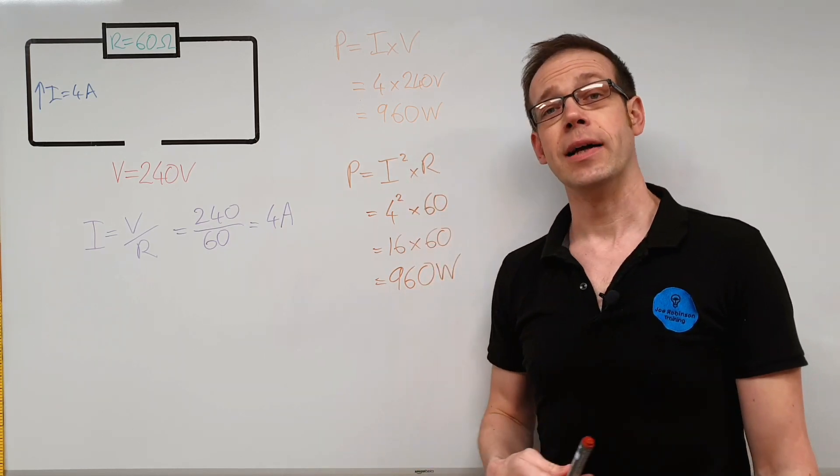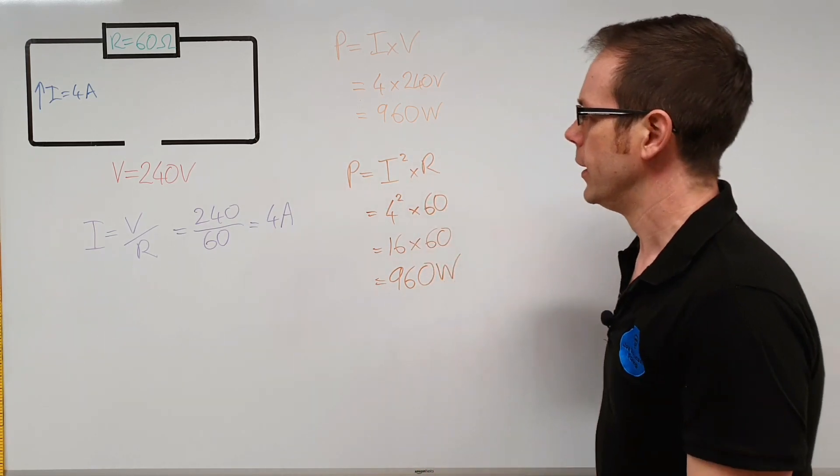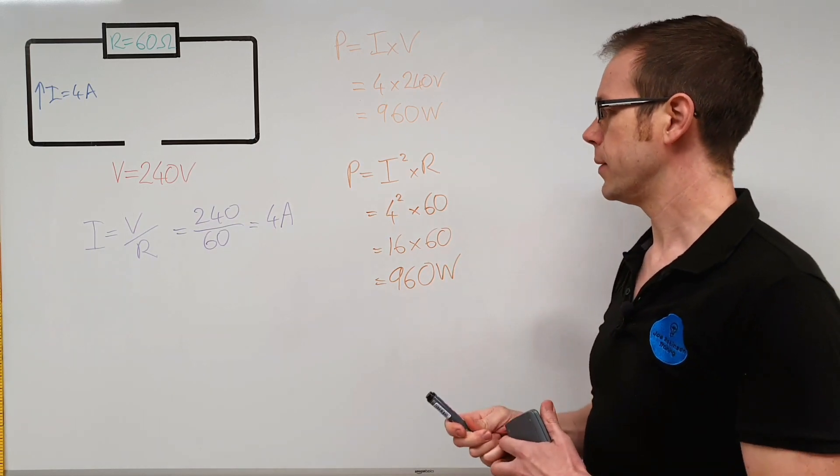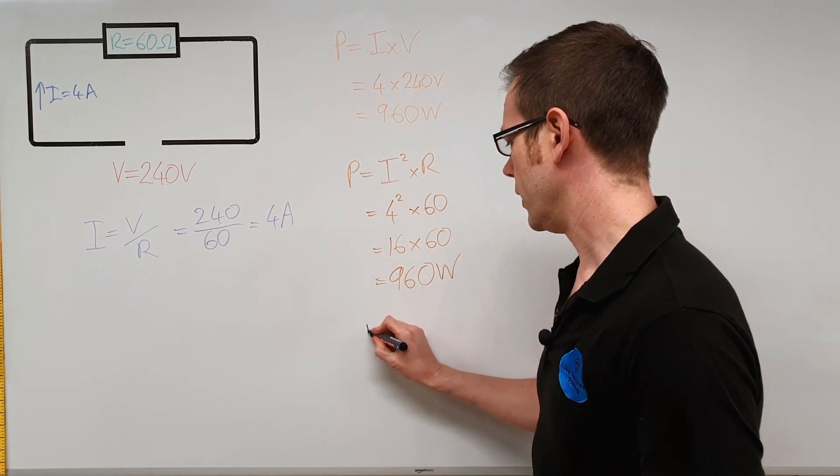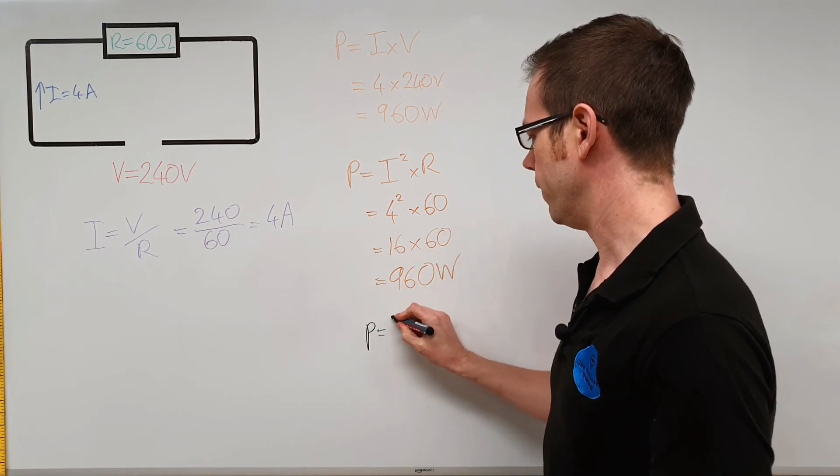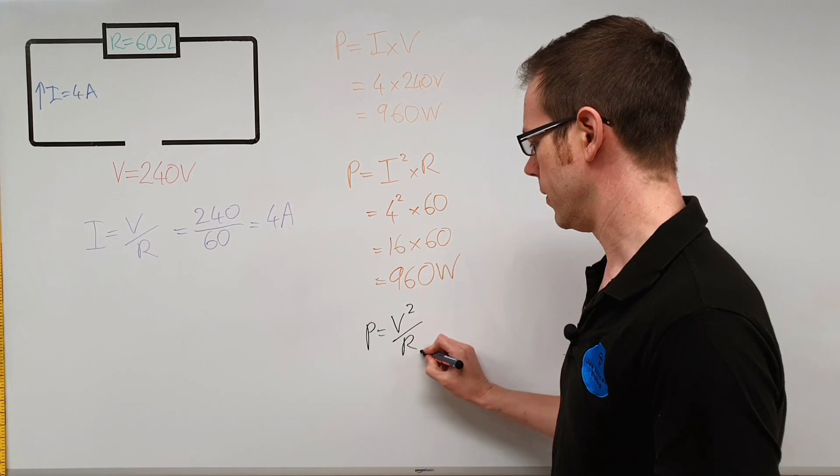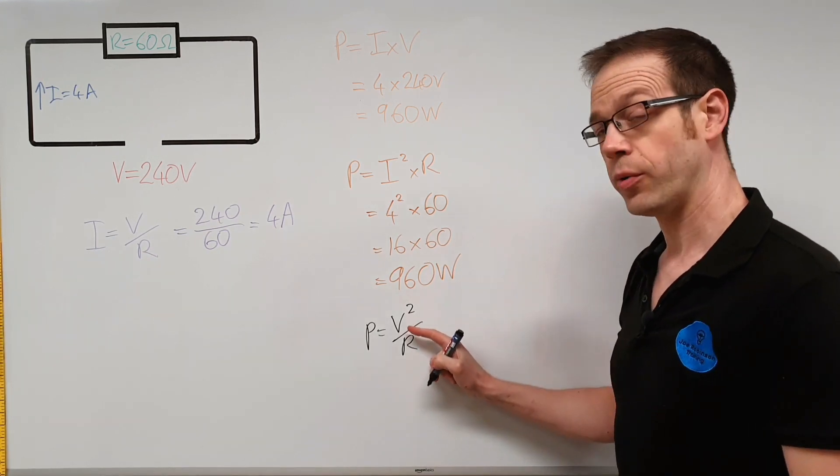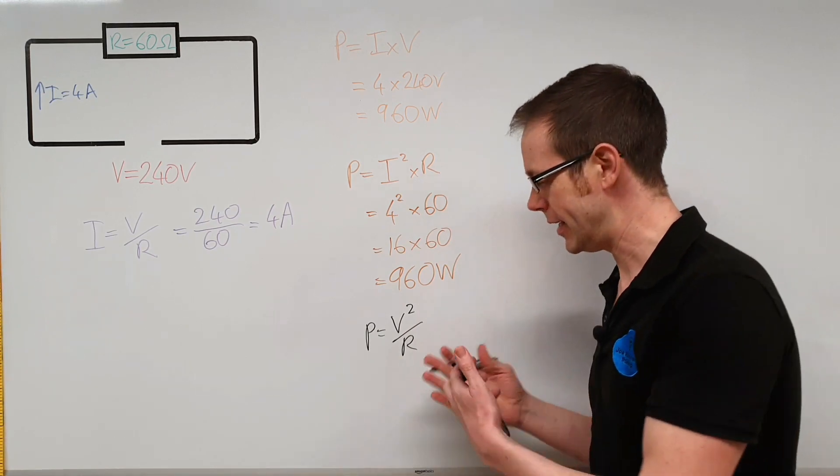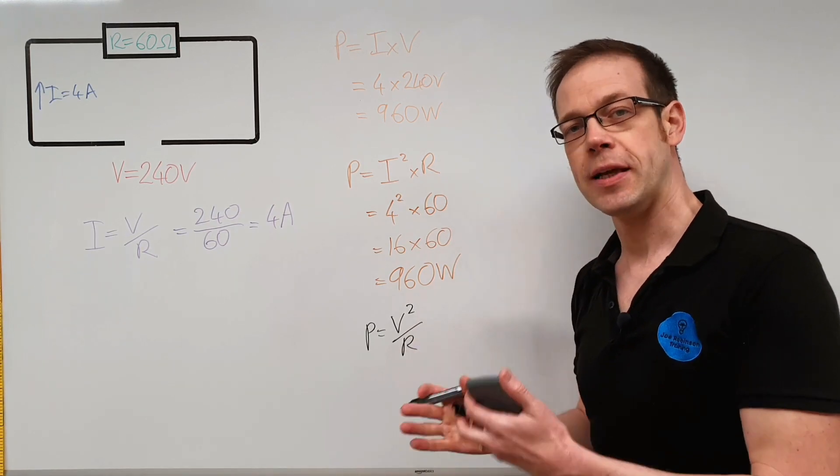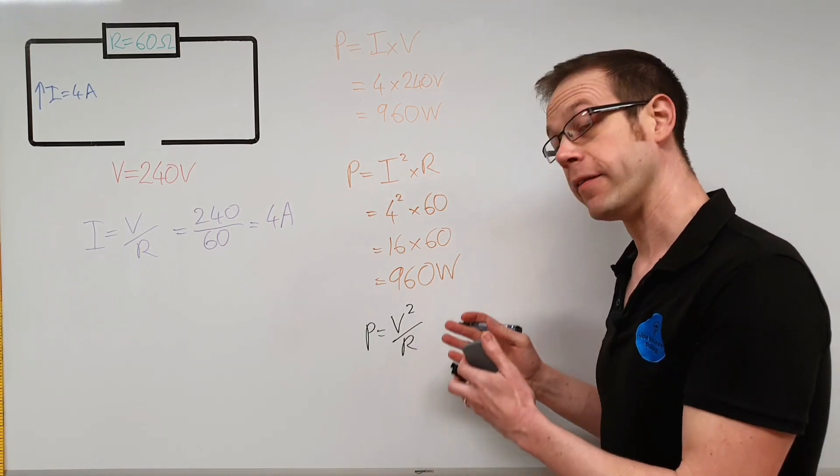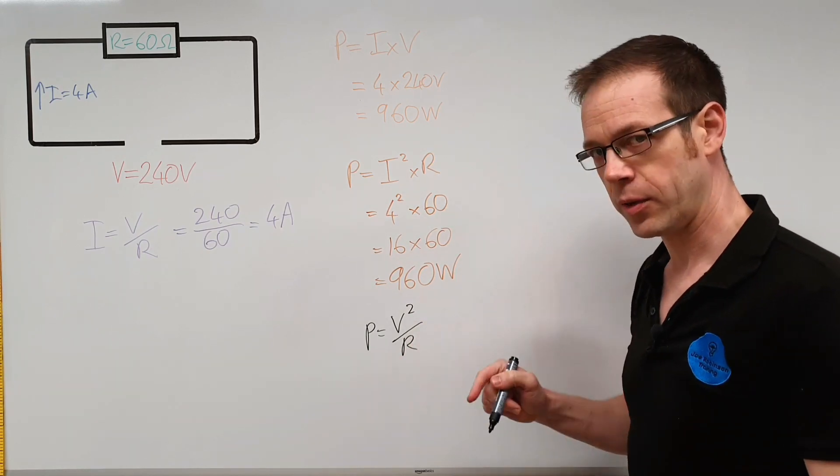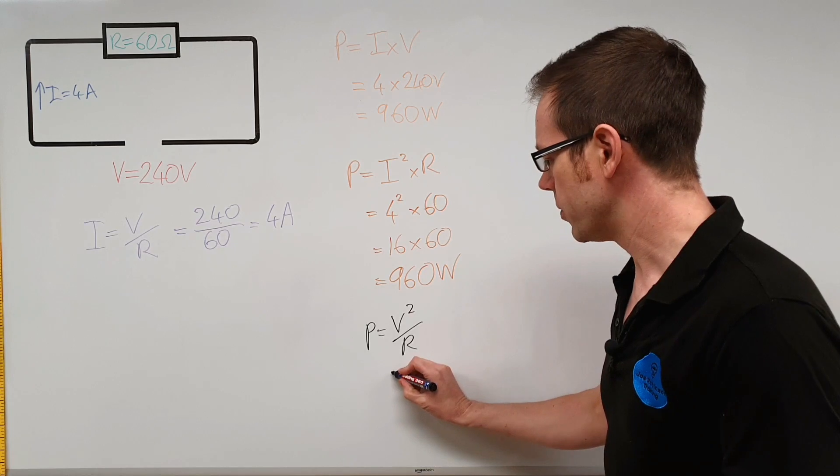So now let's tackle our third power formula. For this one, if you remember, the formula is P is equal to V squared divided by R. So P is equal to V squared over R. So you'll see here there's no current involved. Although again, the current is buried inside there but it's hidden away so that we can't see it. And again, if you're not sure how current is buried in here, please go back and watch the video where I explained where this formula comes from.